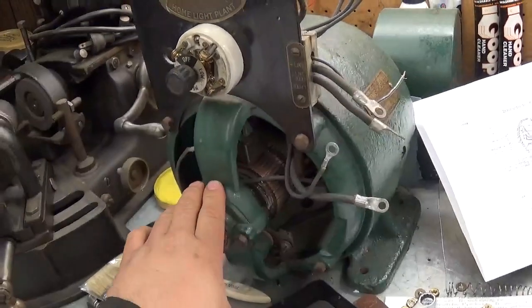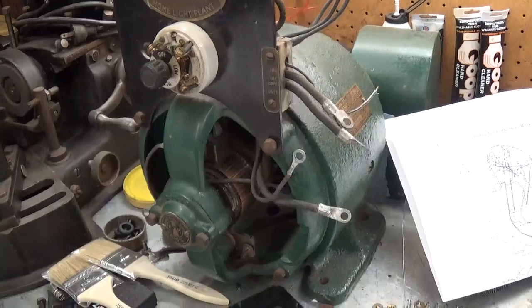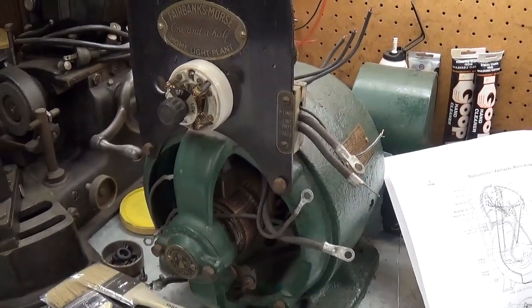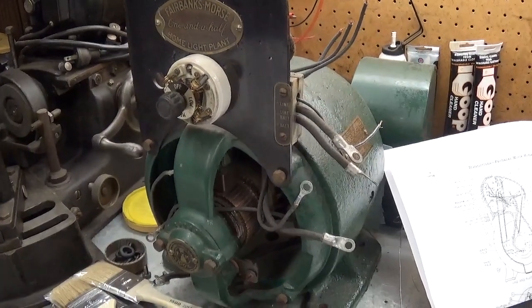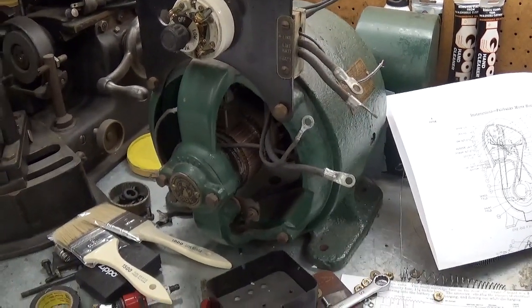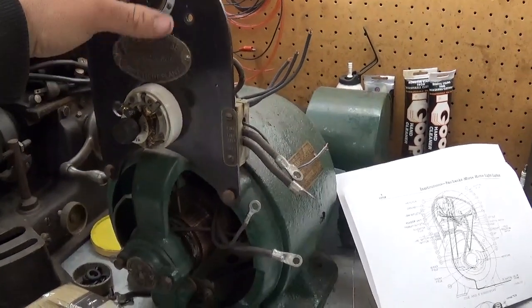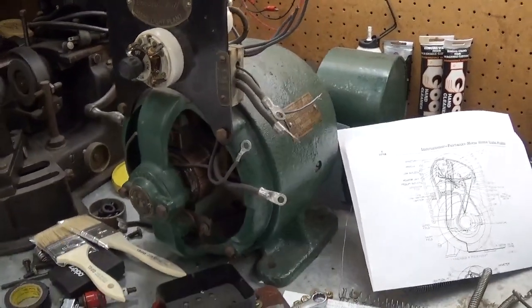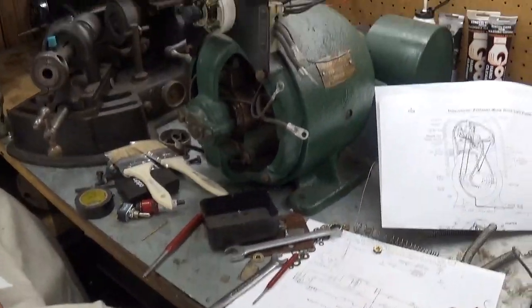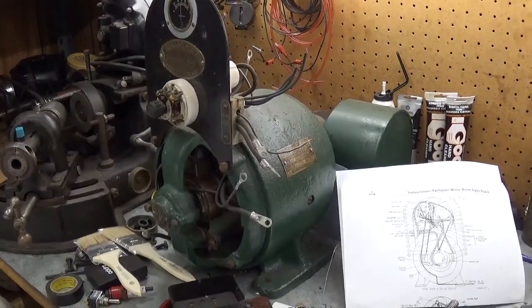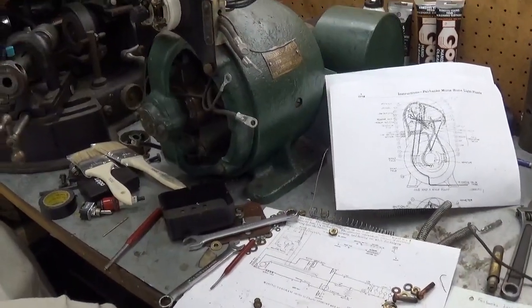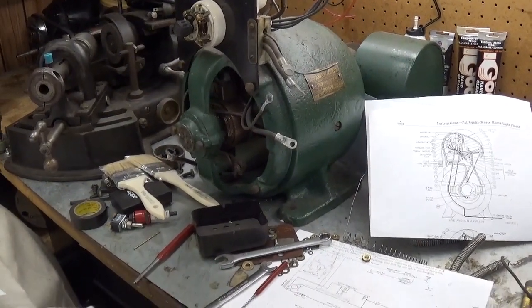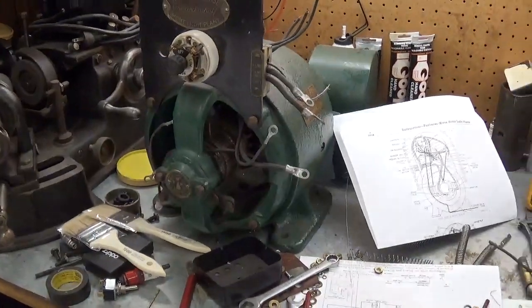This is not my generator, this belongs to another engine collector. He's got the complete home light plant with the one and a half horse engine and the big sub base and all that. But he was having issues with the generator not working correctly, so I said I'd take a look at it for him. If you want the big background story, you can go see that other video. But I haven't done much with it since the video where I had it running.